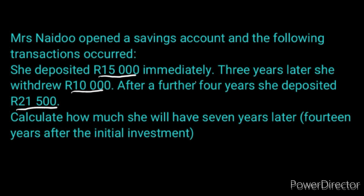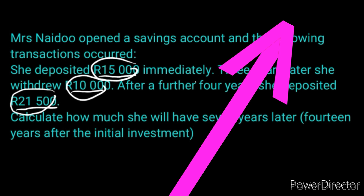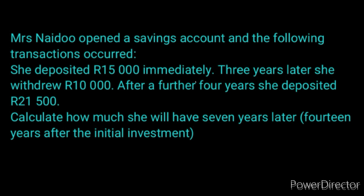Even though there are multiple transactions — deposits and withdrawals — this is still grade 11 financial mathematics. In fact, it is the topic called timeline. This is not an annuity situation because it is not a consistent period. It is not deposited every month, every three months, every six months, or every year. The first transaction is done immediately, the next three years later, and a withdrawal instead of a deposit — then after a further four years she deposited 21,500. Because it is not a consistent period and a consistent amount, it is not an annuity situation.